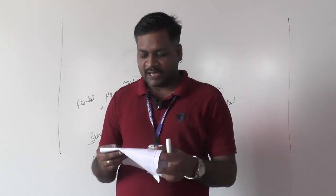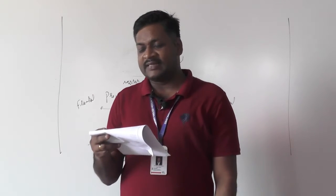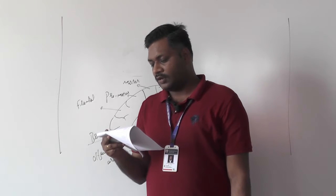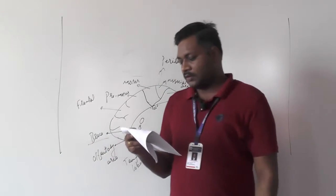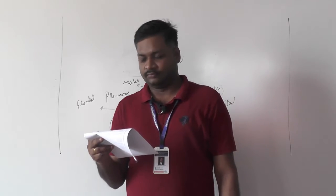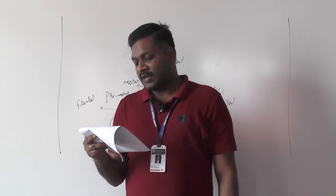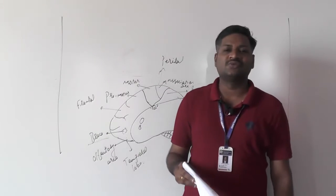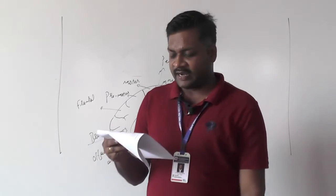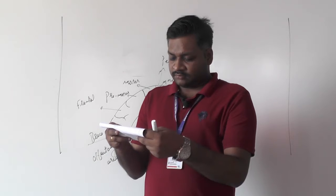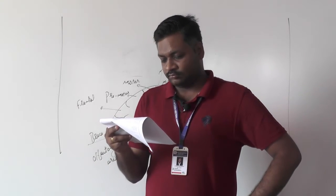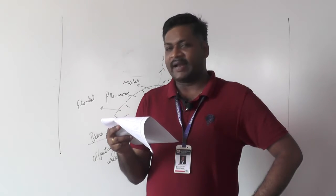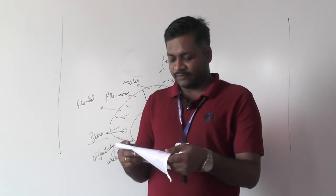Question 103: ventricles of the brain are lined by ependymal cells. Question 104: arborvitae is a part of the cerebrum. Question 105: genu and splenium are associated with the cerebrum. Question 106: in the human brain, the central sulcus is found between the frontal and parietal lobe — option A.